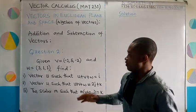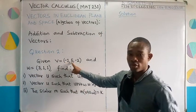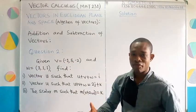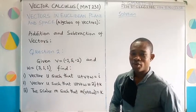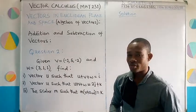In our second question, we are given the vectors v equal to (-1, 5, -2) and w equal to (3, 1, 1).